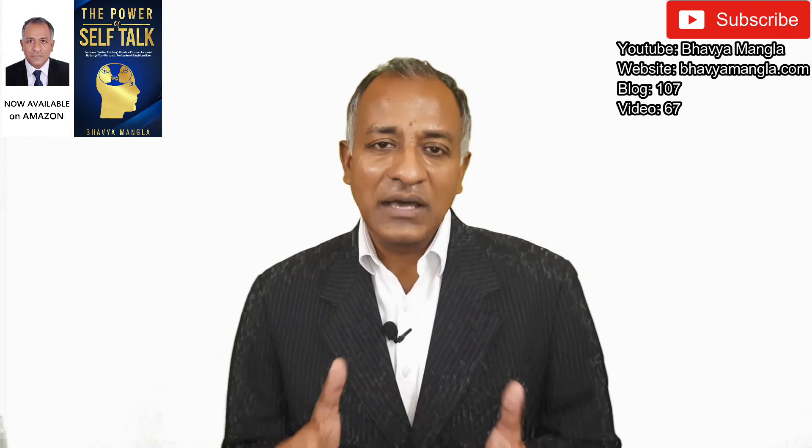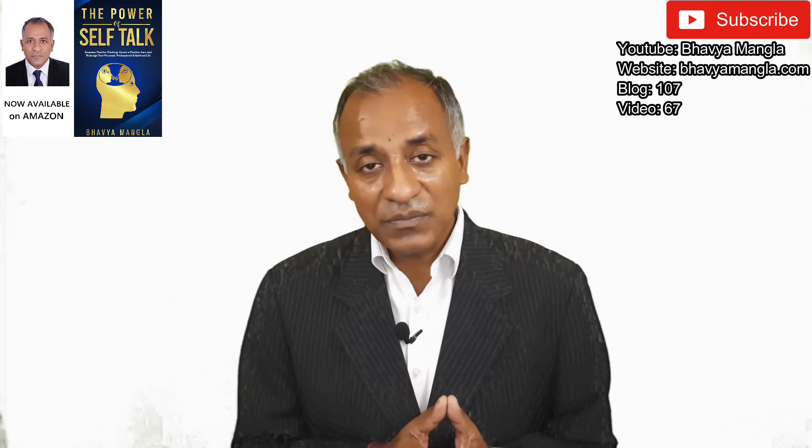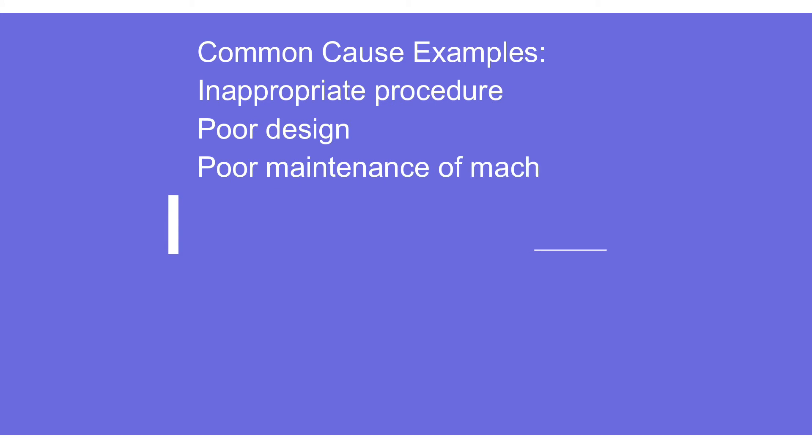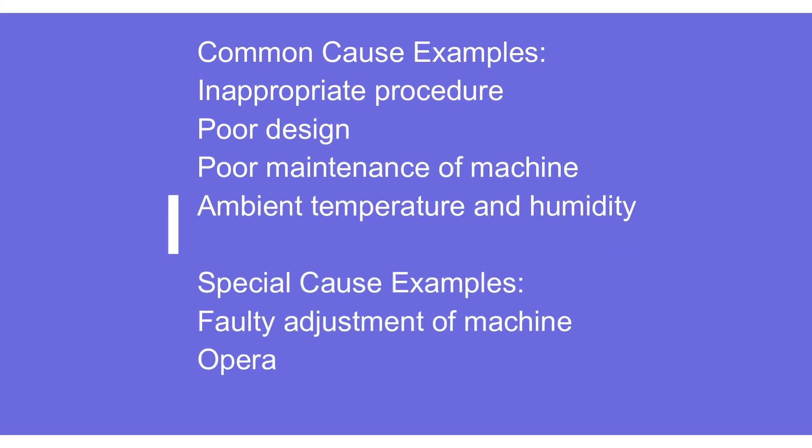Common cause actions include changing the supplier, improving machine accuracy, or improving people's competencies by hiring more competent personnel. For special causes, actions relate to sudden changes in the process — for example, if a person is feeling sleepy and making errors, or if there is an incorrect adjustment leading to a change. These are key examples of actions for special causes.